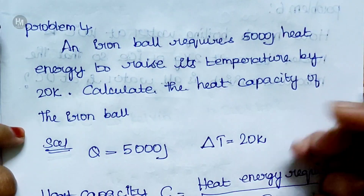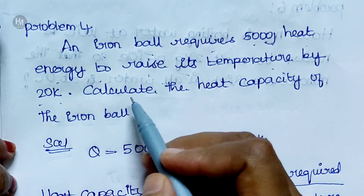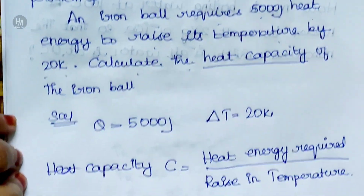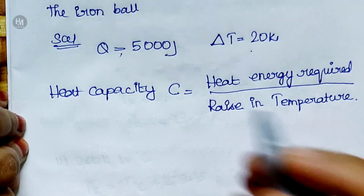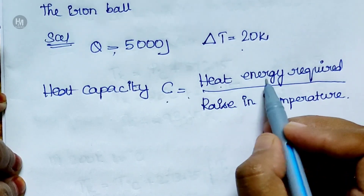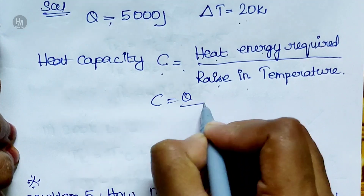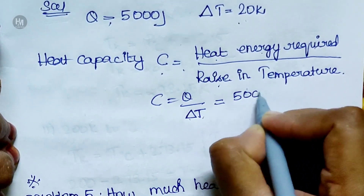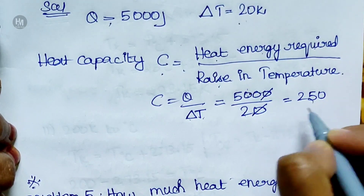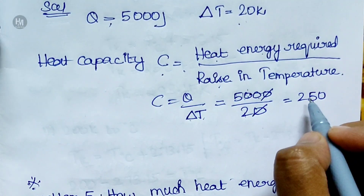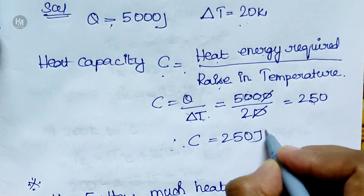Problem 4: An iron ball requires 5000 J of heat energy to raise temperature by 20 Kelvin. Calculate the heat capacity. Heat capacity C is equal to Q divided by delta T, that is 5000 divided by 20. Cancelling zeros gives 250. Therefore C is equal to 250 J per Kelvin.